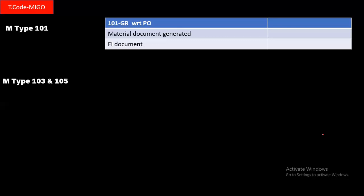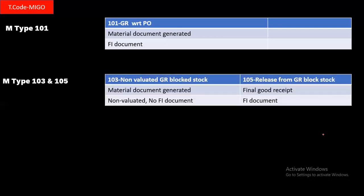In that case, first we do movement type 103, and after inspection, 105 is done. At the time of 103, the material will be non-valuated, meaning we cannot use the material. We have to release it from 103 to 105, and then we can use it.